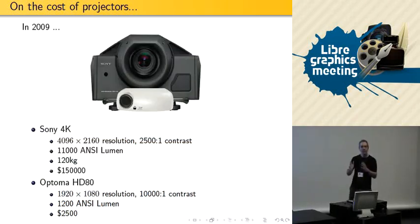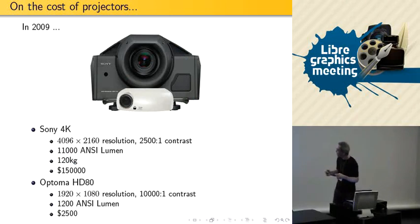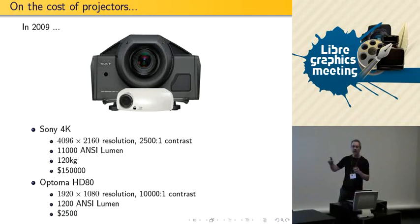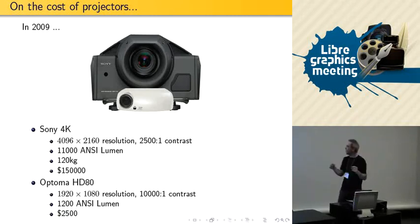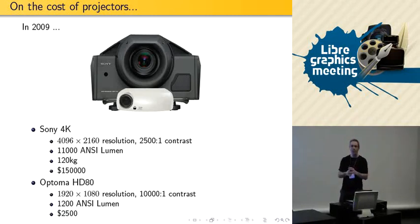Nowadays there have been evolutions in different directions — just like with cars. The Sony 4K is a 4000-pixel-wide by 2000-pixel-high single image. However, it looks like a big SUV, weighs 120 kilos, and is very expensive — $150,000 per projector. So this is not usable.